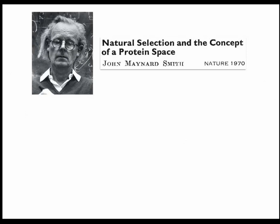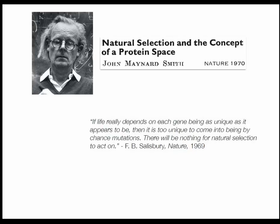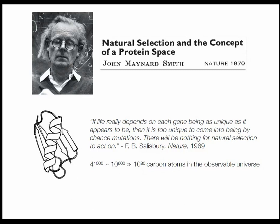I'd like to highlight how we use some old ideas from evolutionary theory to make sense of how gene regulatory systems are robust and evolvable, and how doing this allowed us to reanimate some old ideas in evolutionary theory. The first idea has its roots in a paper John Maynard Smith wrote in Nature in 1970 called "Natural Selection and the Concept of a Protein Space." This was a response to a letter by Frank Salisbury, who put forward what he thought was a problem in evolutionary theory. Salisbury argued: if life really depends on each gene being as unique as it appears to be, then it is too unique to come into being by chance mutations — there will be nothing for natural selection to act on. He set this up by considering a hypothetical protein encoded by a nucleic acid sequence of length 1,000, giving 4^1000 — roughly 10^600 — possible DNA sequences, which exceeds the number of carbon atoms in the observable universe by several hundreds of orders of magnitude.